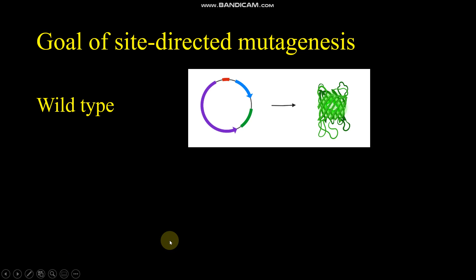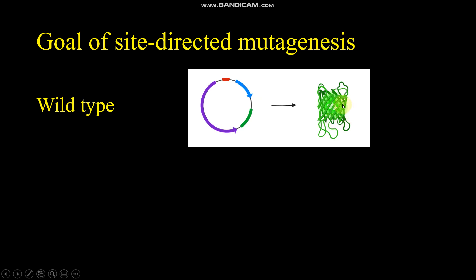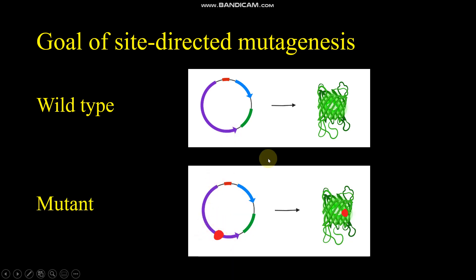So what is the goal of site-directed mutagenesis? Imagine you are studying a protein, so you have in the lab a plasmid DNA encoding for this protein. It can be useful to create mutations in this protein, so first you have to mutate your plasmid DNA. This can be achieved by site-directed mutagenesis — we can insert a mutation in the plasmid DNA which will result in a mutated protein.